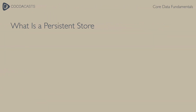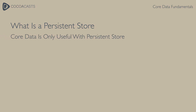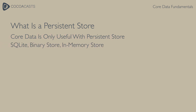But what is a persistent store? Remember that Core Data manages an object graph. The framework is only useful if the persistent store coordinator is connected to one or more persistent stores. Out of the box, Core Data supports three persistent store types: a SQLite database, a binary store, and an in-memory store. Each persistent store type has its pros and cons.